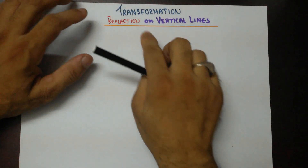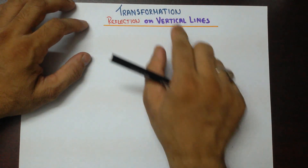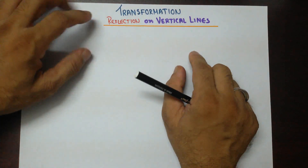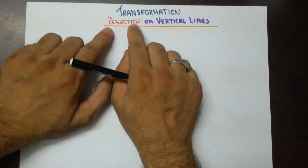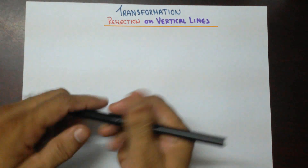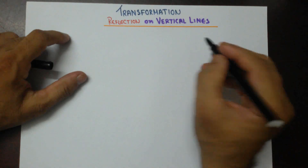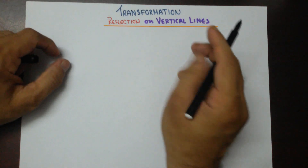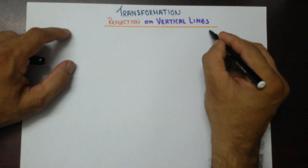Good morning. Today's lesson is on transformation and we are covering the topic reflection on vertical lines. First, let's talk about the reflection on y-axis.